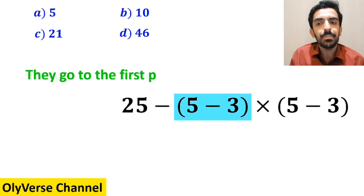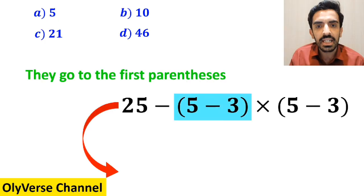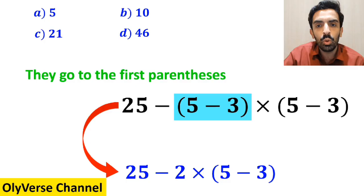Then they go to the first parenthesis, and instead of this expression, they write 25 minus 2 multiplied by 5 minus 3 inside the parenthesis.